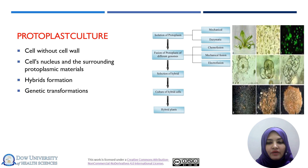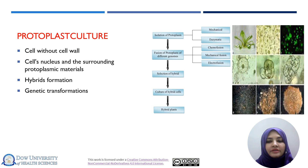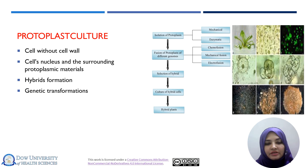Why do we use protoplasts? For production of somatic hybridization to produce novel or new varieties — inter-specific or inter-generic hybridization can be done. By this method, genetic transformation can also be done, which is a very important technique used in plant tissue culture.